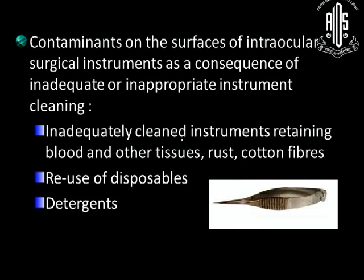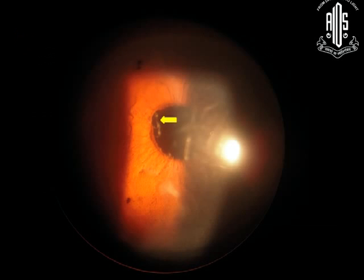Contaminants on the surfaces of intraocular surgical instruments as a consequence of inadequate or inappropriate instrument cleaning include: inadequately cleaned instruments retaining blood or other tissues, rust, cotton fibres, reuse of disposables, and detergents. Here is a case of mild TASS after uncomplicated phacoemulsification surgery — and look what we found: a cotton fibre in the pupillary area.